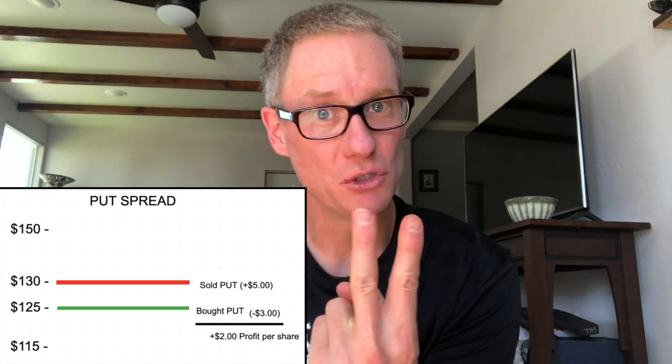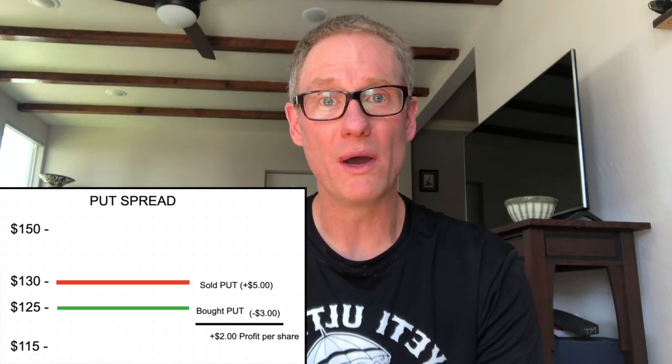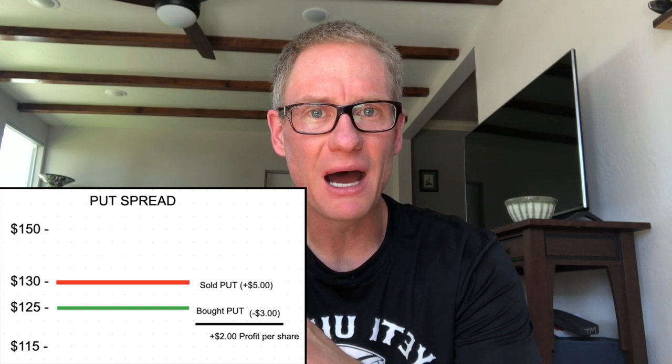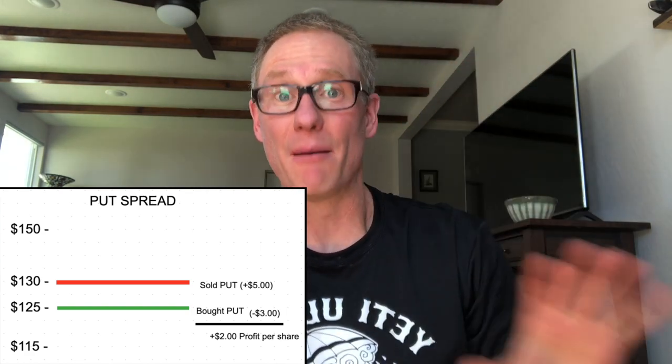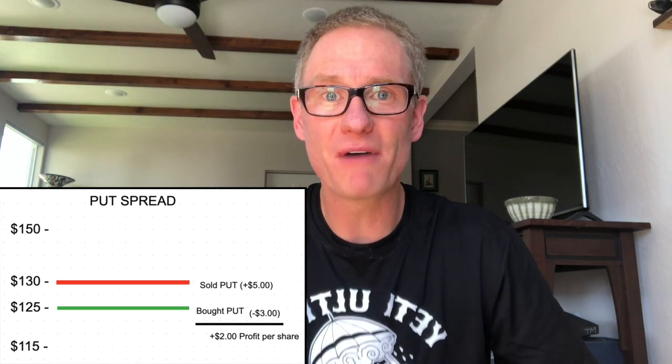To keep things simple, let's deal with put spreads. A put spread is when you sell a put and you buy a put. You sell the put for say $5 and you buy a put for say $3, and you keep the $2 credit. Now that sounds great — if your put spread is 130 by 125 and the stock's trading at $150, that's a $5-wide put spread. You can't lose more than $500 for each one-lot. One contract, $500 risk. That can't change.